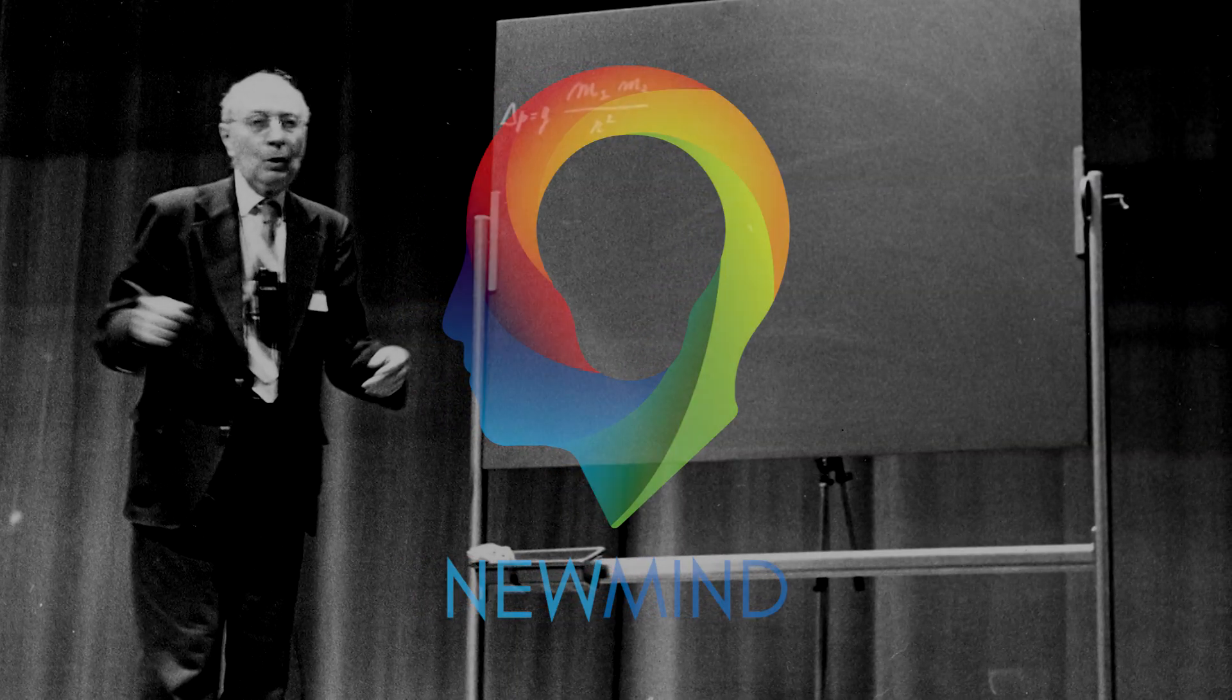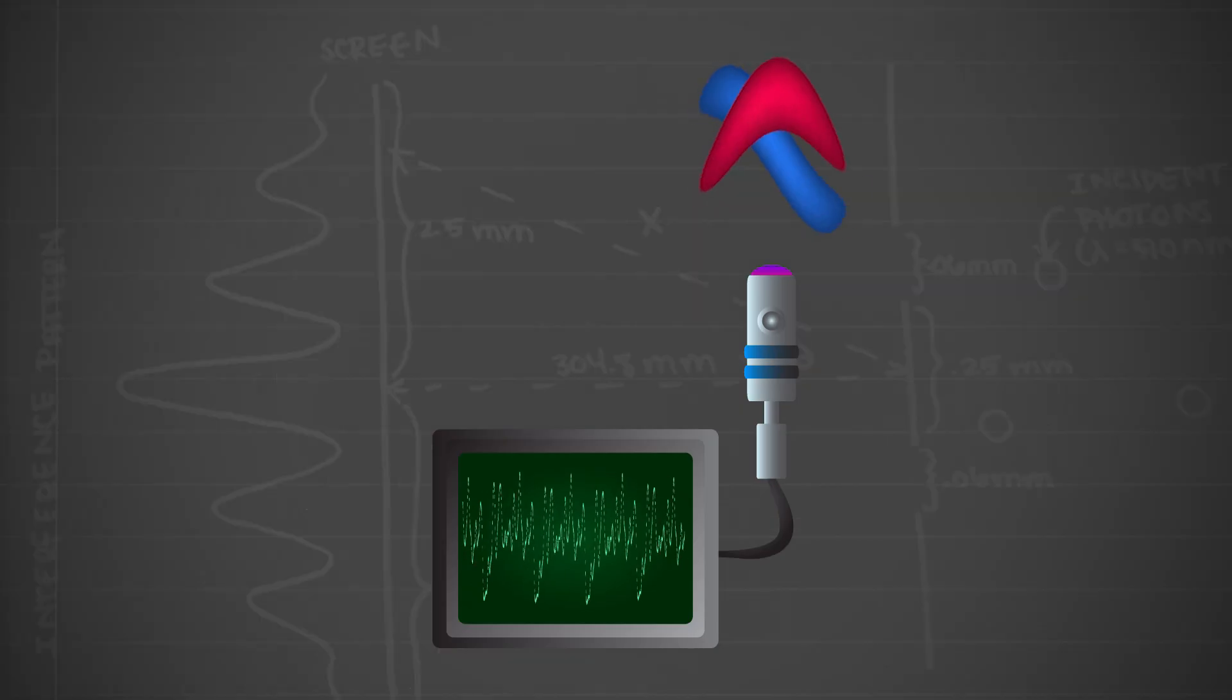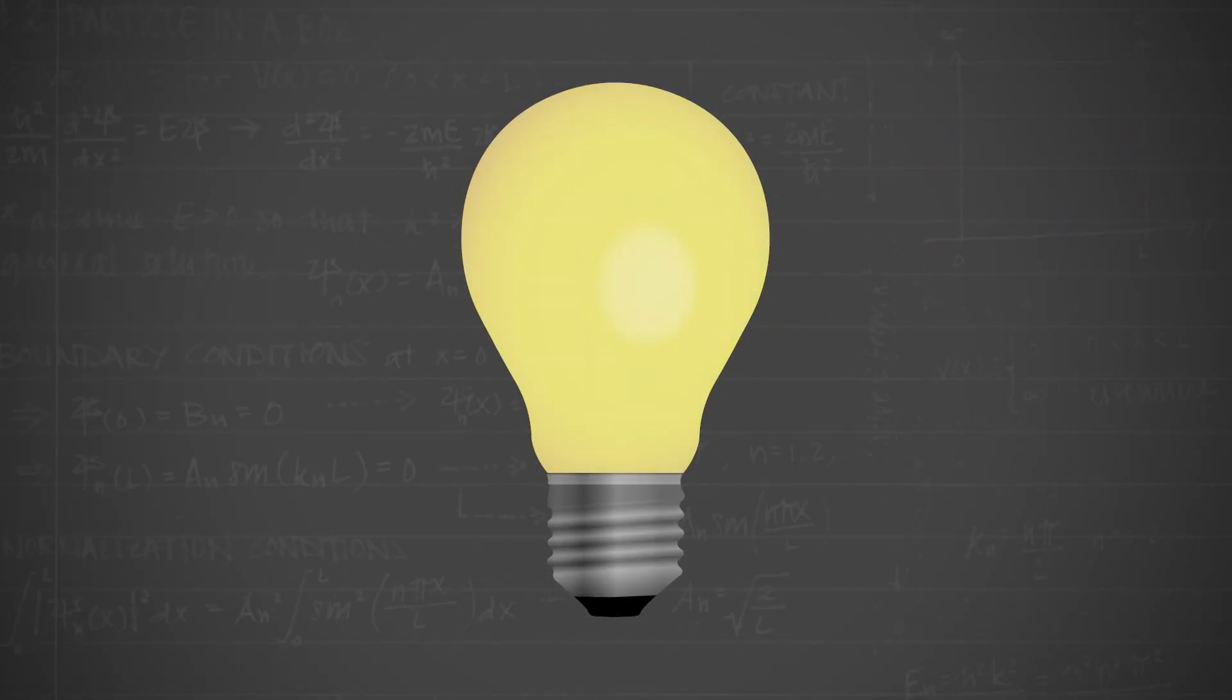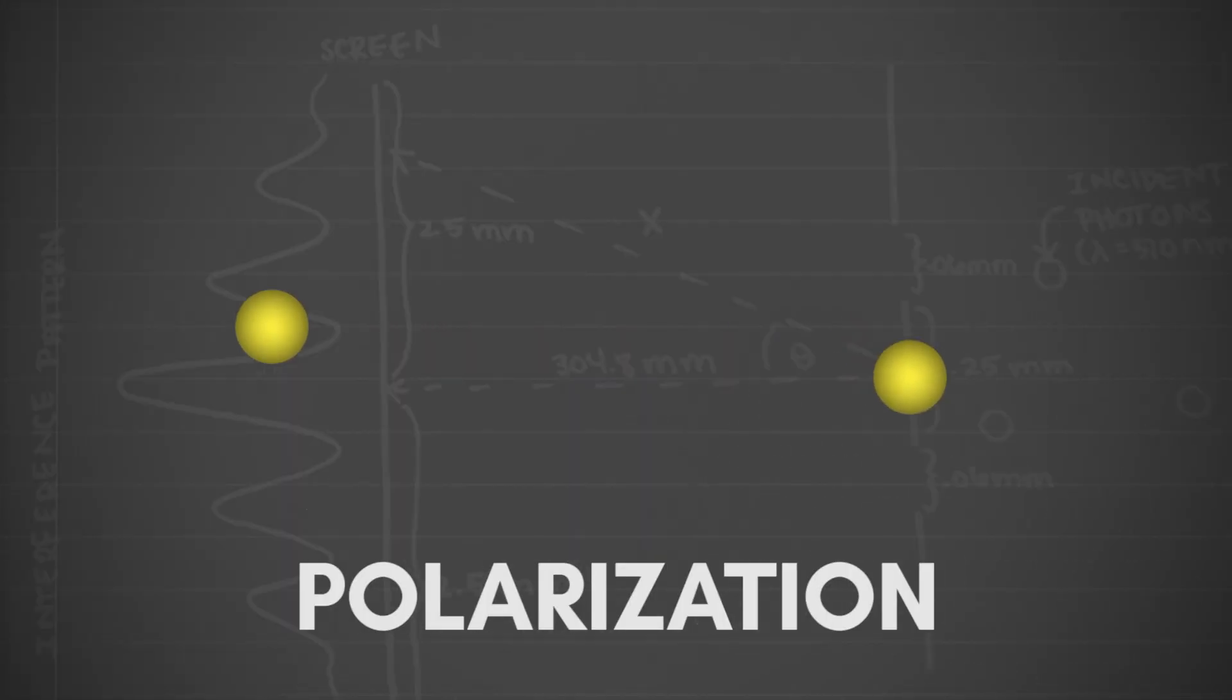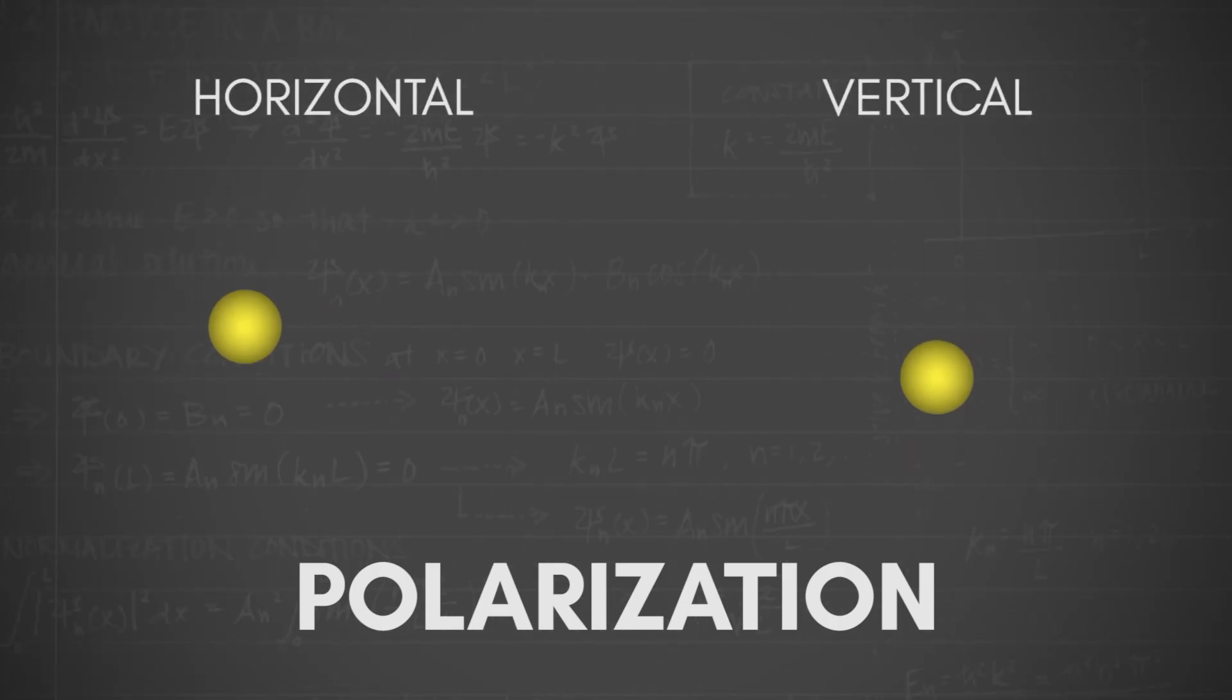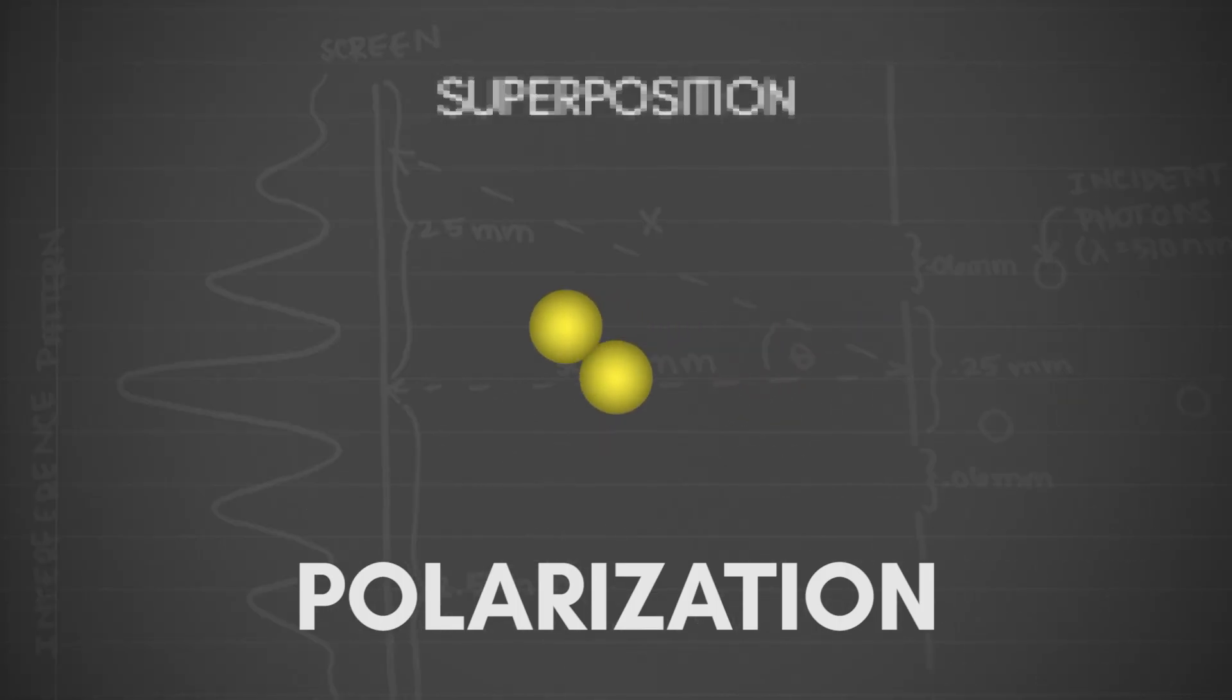Though it draws upon several principles of quantum mechanics, Wigner's thought experiment is relatively simple. It's based on a quantum measurement of a physical system. In our example, we'll use the polarization of a single photon. Polarization is a property of photons that, when measured, can be described linearly as being either horizontal or vertical. However, in quantum mechanics, until that measurement is made, the photon exists in both polarization states at the same time. This is known as a superposition.